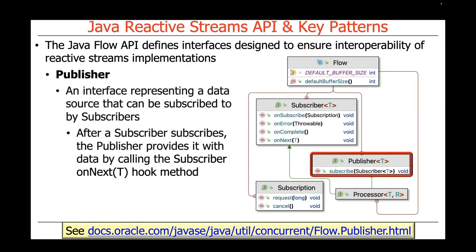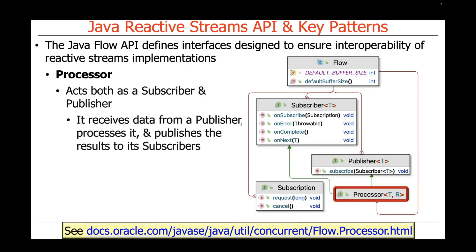A Publisher is an interface that represents a data source that subscribers can subscribe to. When a subscriber subscribes to the publisher, it gives a reference to itself, and then the publisher will start sending it data by calling the onNext hook method. There's something else the publisher will also do: it'll call the onSubscribe method, giving the subscriber a chance to register its interest and how much data it can consume.